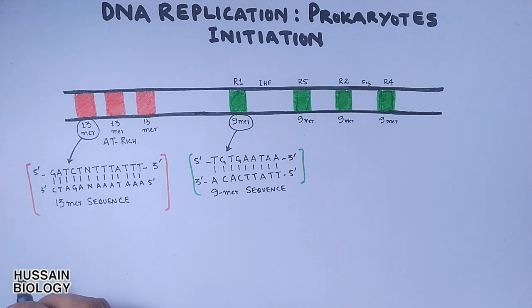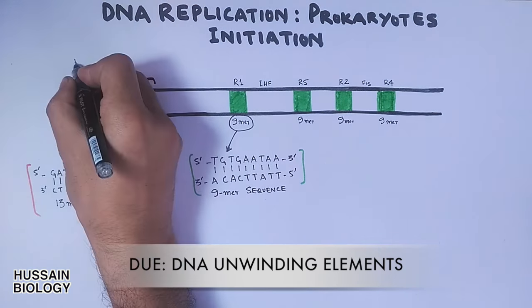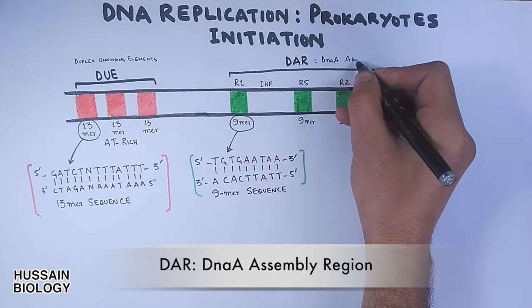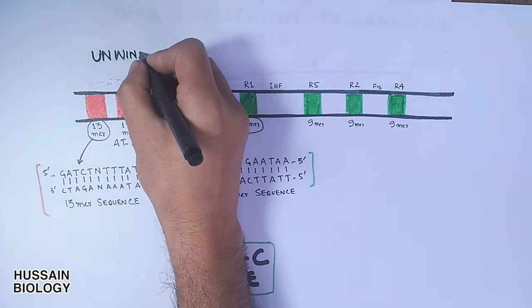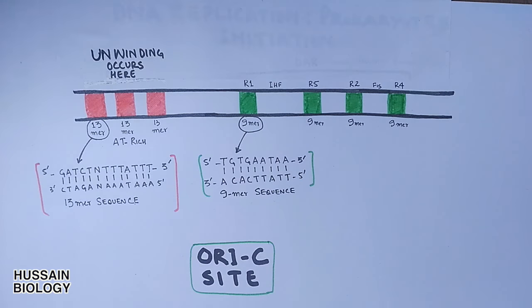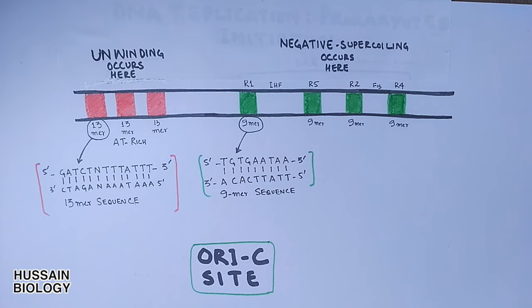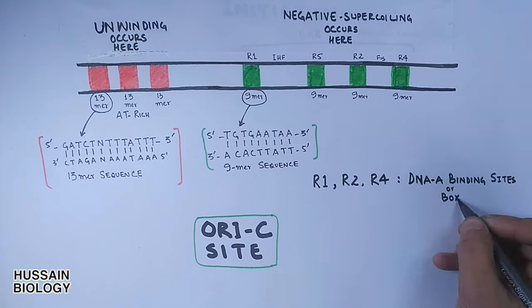The three 13mer sequences are collectively termed DUE, which is the DNA unwinding element, while the 9mer region is collectively termed DAR—the DNA A assembly region. Unwinding occurs here at the DUE region of 13mers, while stress, torsion, and negative supercoiling occur at the DAR site. This is the OriC site in E. coli where initiation of DNA replication starts. Remember, these R boxes—R1, R2, and R4—are the DNA A protein binding sites.